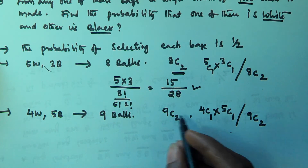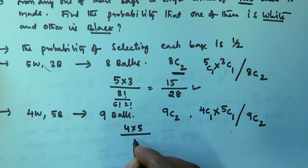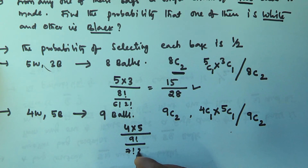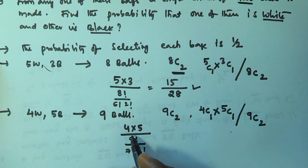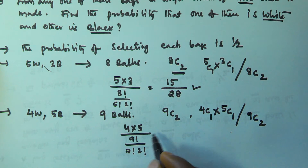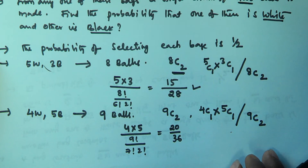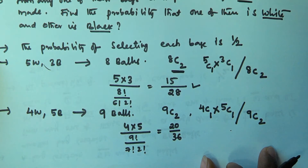So 4C1 is 4 and 5C1 is 5, and 9C2 is 9! divided by 7! × 2!, which gives 36. So 4 × 5 = 20, and the probability of selecting 1 white ball and 1 black ball from the second bag is 20/36.